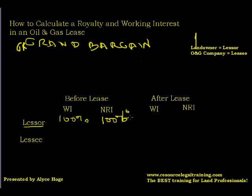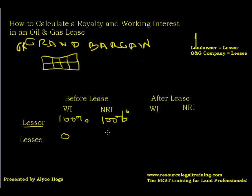It can get more expensive the more work and rework you have to have on it. So most landowners say, okay oil and gas company, since we're going to use a one-eighth royalty — and I'm going to do a rough drawing — this is going to be one-eighths. Right now the lessor owns 100%, so they own eight-eighths, and they also own eight-eighths of the net revenue interest. The lessee, before the lease, owns 0% of the working interest and 0% of the net revenue interest.